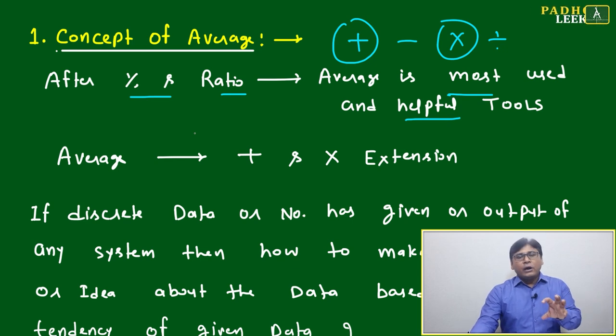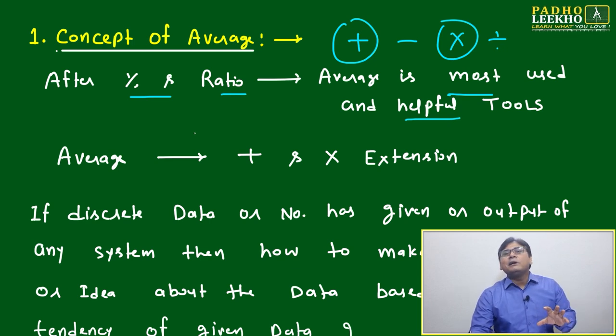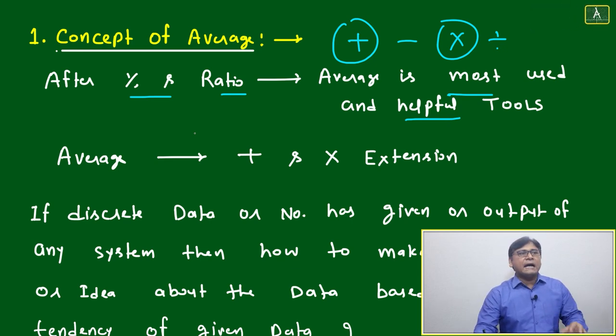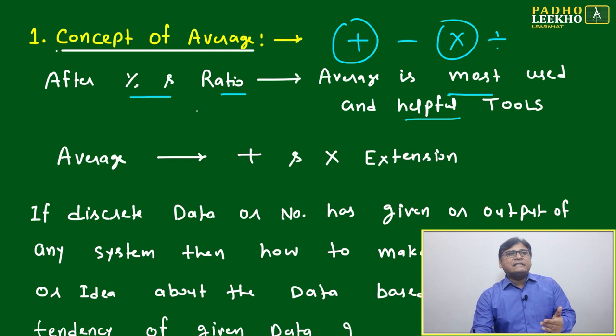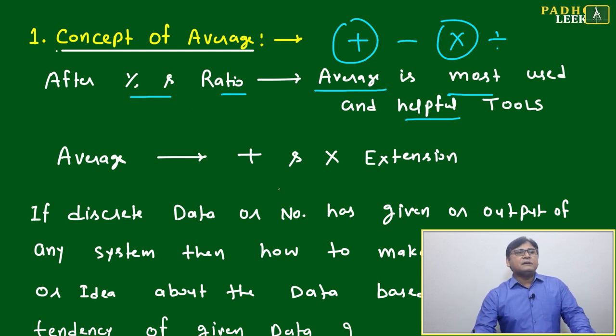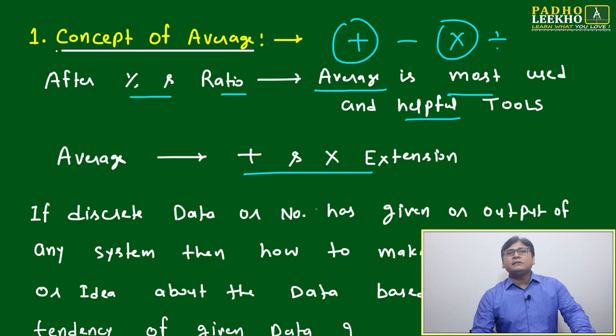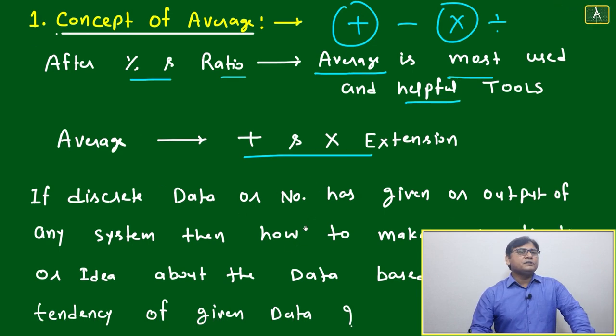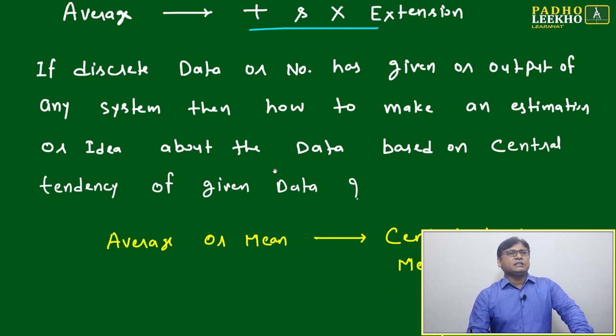Addition and multiplication are the main core fundamental arithmetic operations. Based on that, the first tool we develop is percentage, next is ratio, and after percentage and ratio, average is the most powerful and helpful tool. Average is just an extension of addition and multiplication.